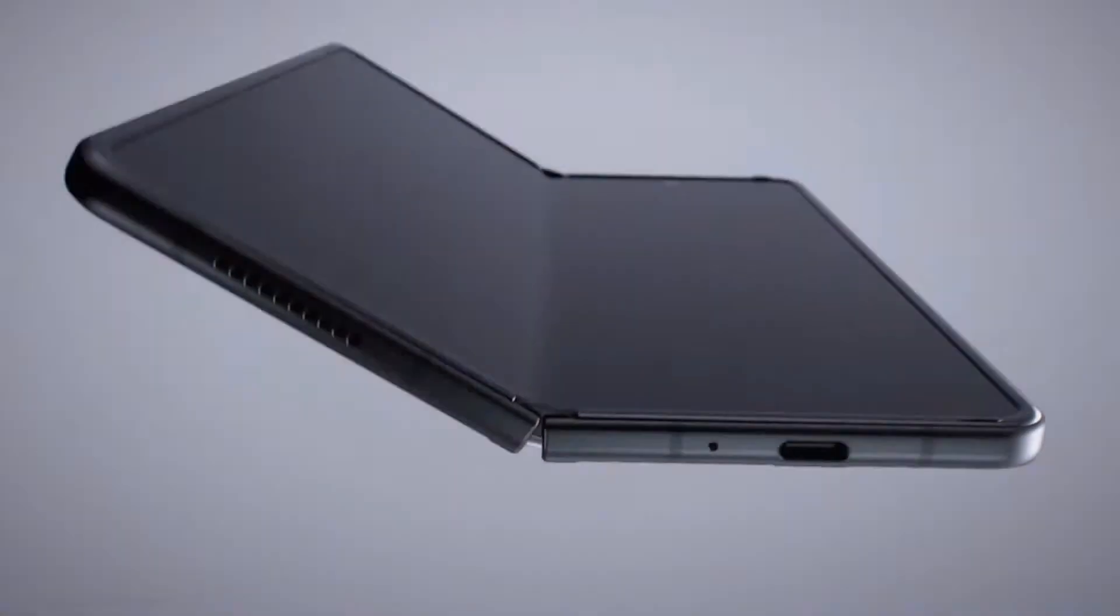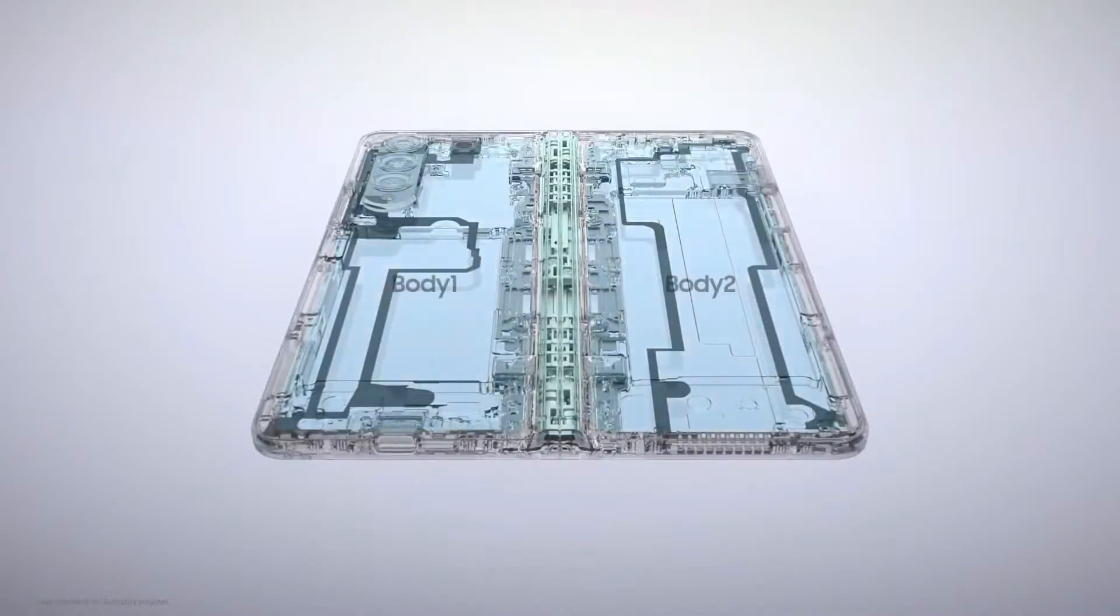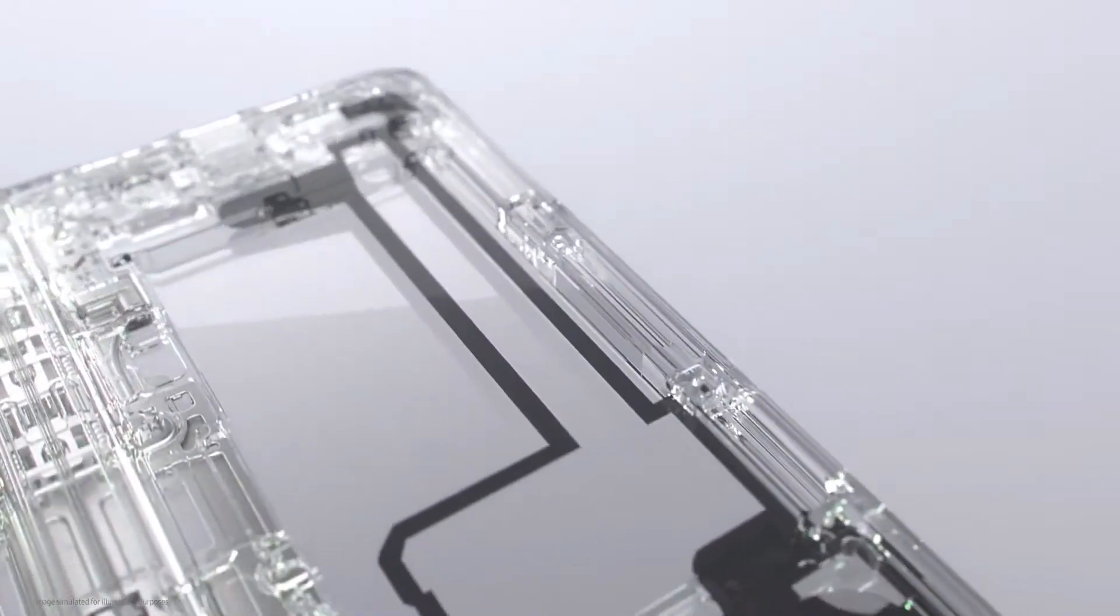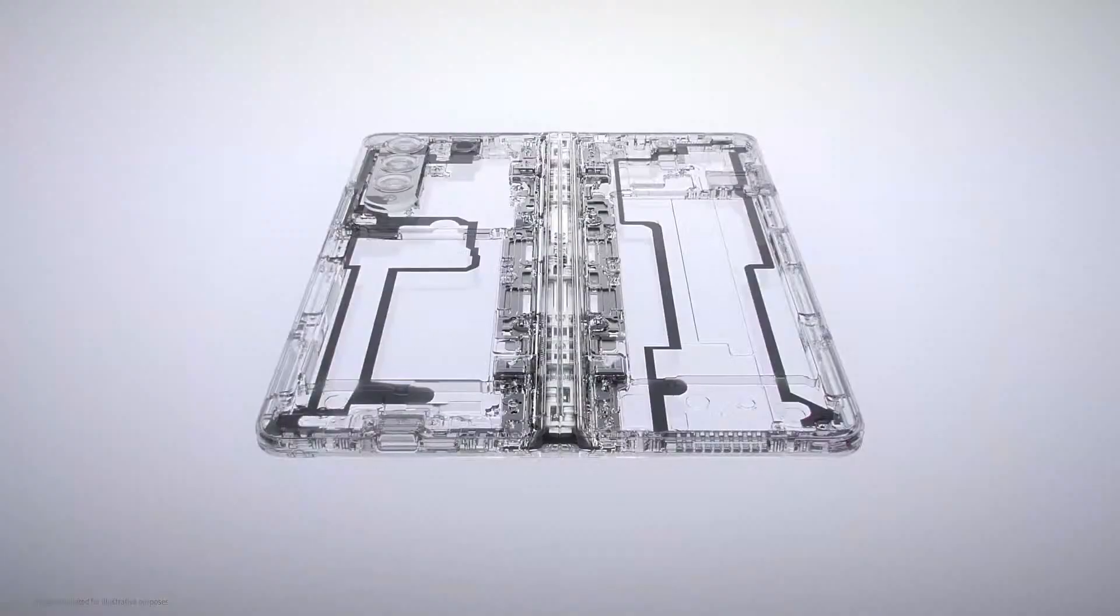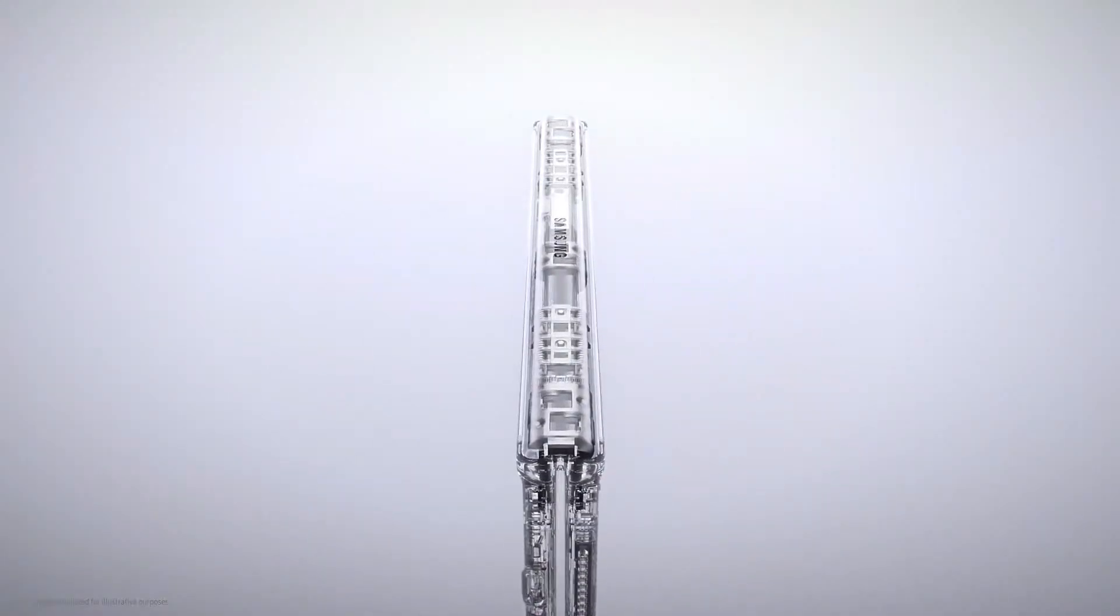But making the Fold water resistant wasn't easy. Unlike bar type smartphones, the Fold is made of three parts: two bodies and a hinge. The bodies can be protected from water using the same method as a standard smartphone, but protecting the hinge was a unique challenge.